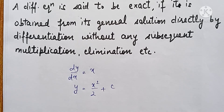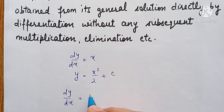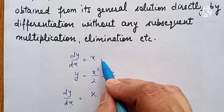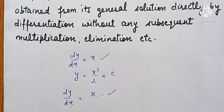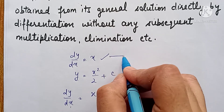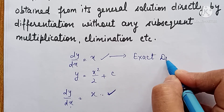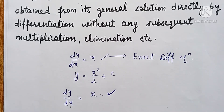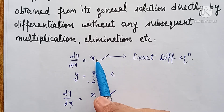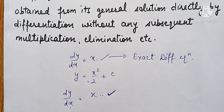If we differentiate this general solution, we get dy/dx = x and the derivative of c is 0. That means we get back the same differential equation. When differentiating the general solution gives us back the same differential equation — that means this is called an exact differential equation. We did no elimination, no multiplication with any term; just differentiating the solution gave us back the same equation, so this is an exact differential equation.